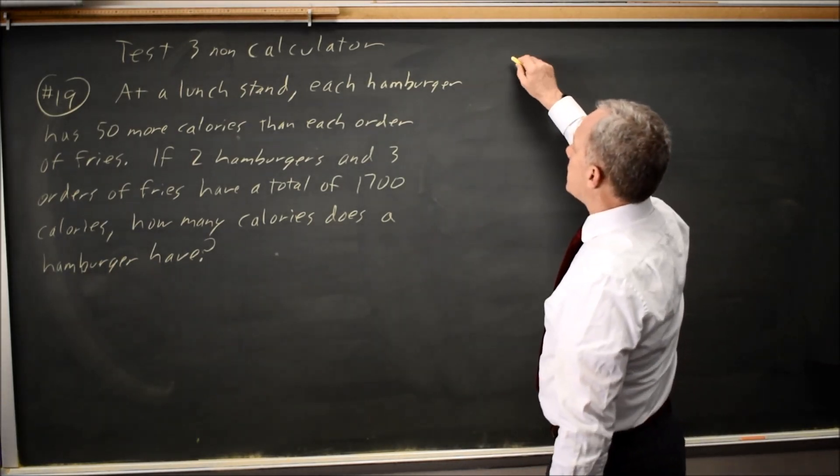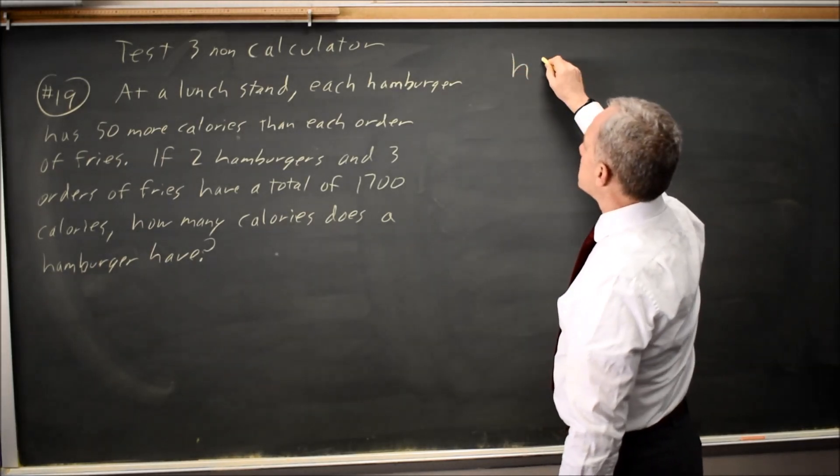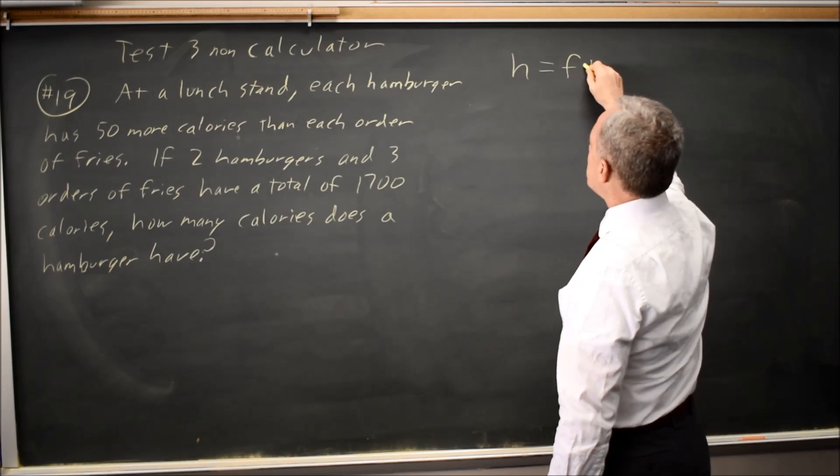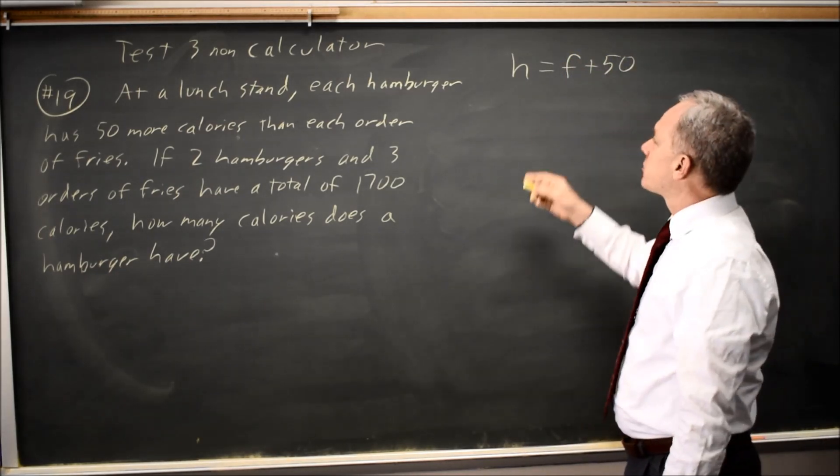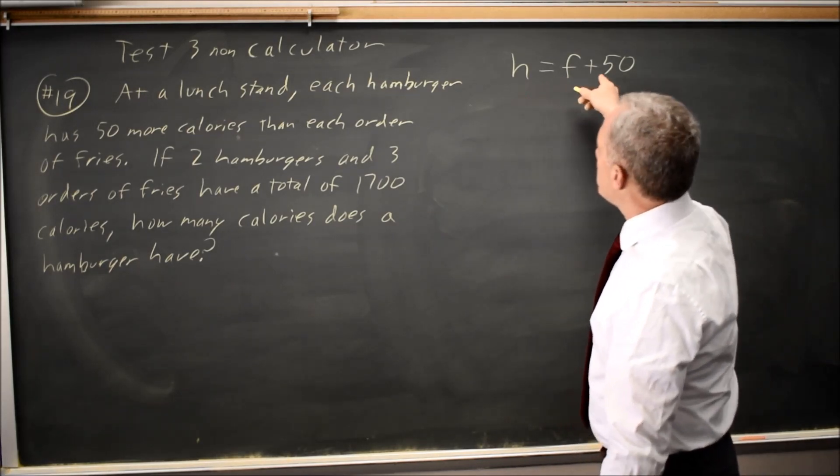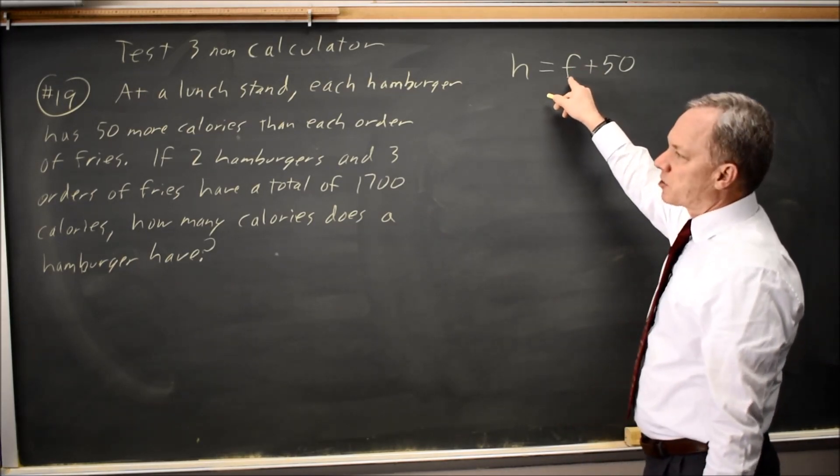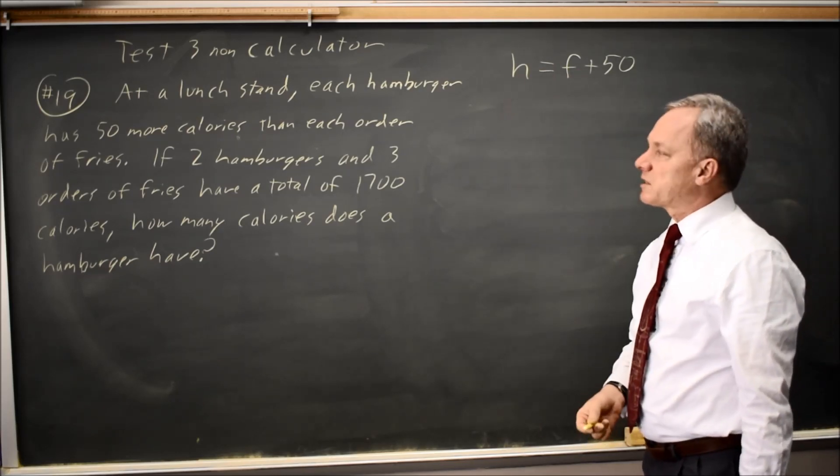In this case, a hamburger, I'm going to use H for hamburger, has 50 more calories than fries. So H equals F plus 50, and I'll always check that carefully a couple times to make sure I have plus 50 on the right side. A hamburger is more than fries. If I add 50 to fries, the hamburger is more, so that's on the correct side.